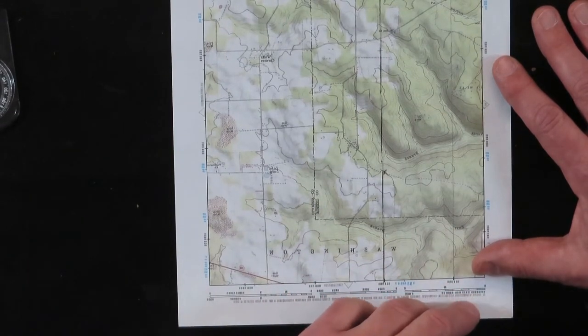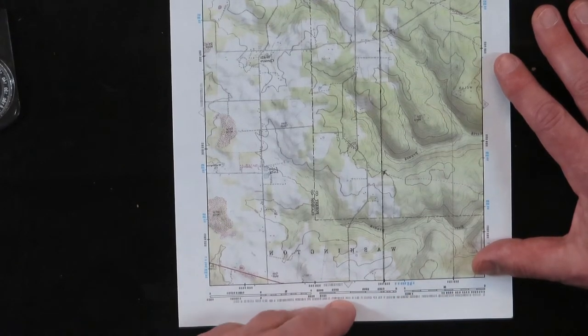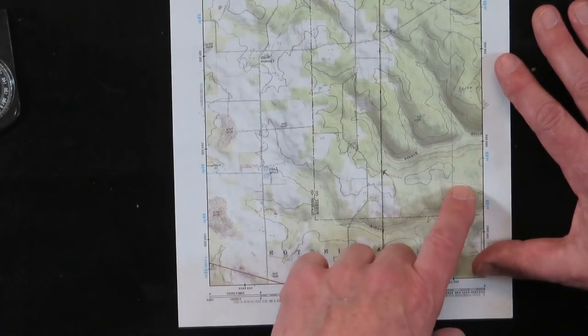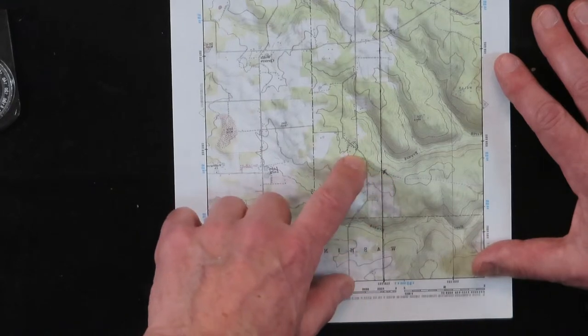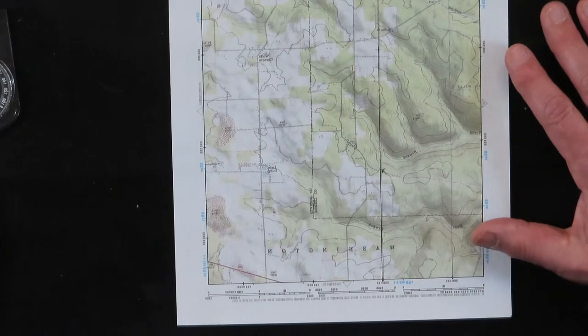Normally they come with some kind of detail at the bottom that will explain what all the symbols mean. But for this purpose here, we'll just talk about the double dashed lines. These are trails. They could be jeep trails or logging road trails. That's normally what you take into the woods.